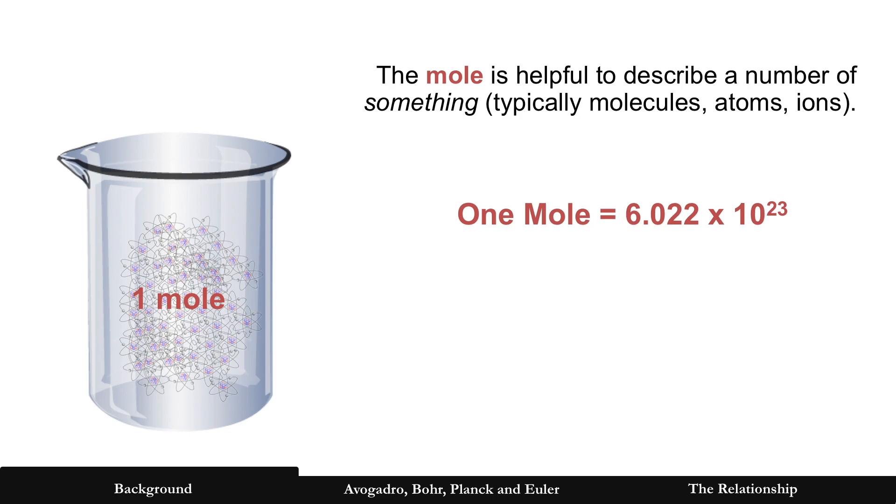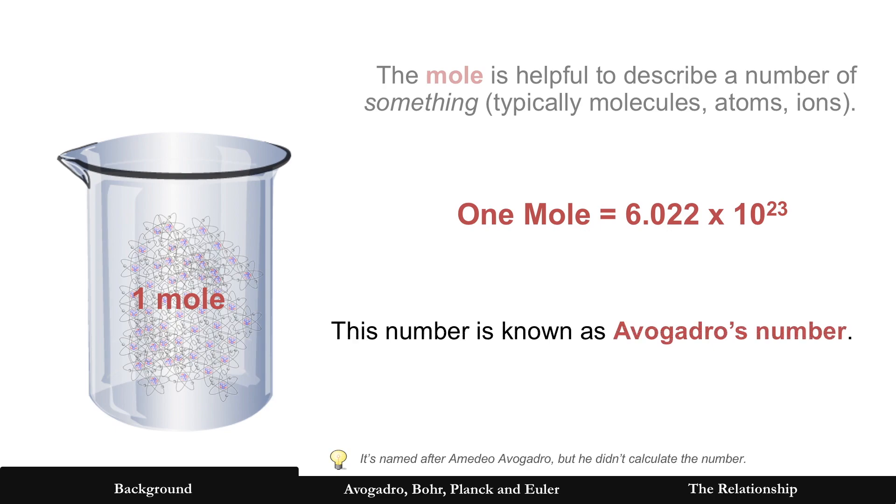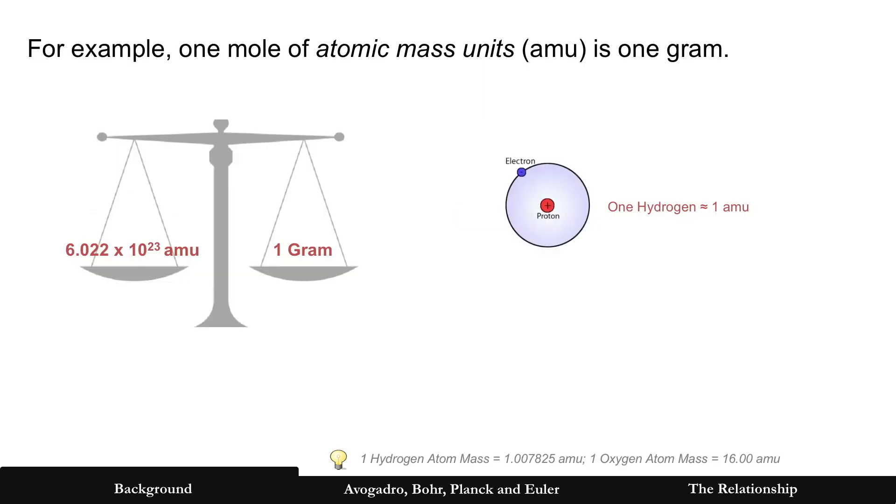So the same thing here where the mole can be described as something, typically molecules or atoms or ions, but a bunch of them. Such that one mole is 6.022 times 10 to the 23rd. And that's a number known as Avogadro's number.